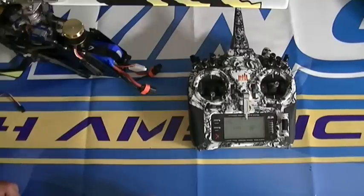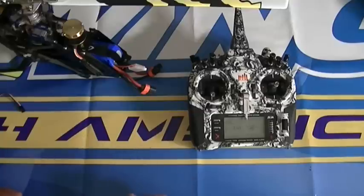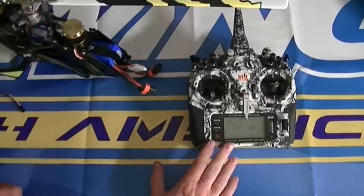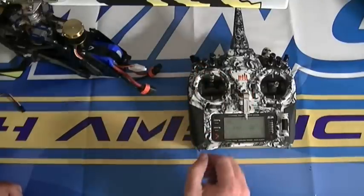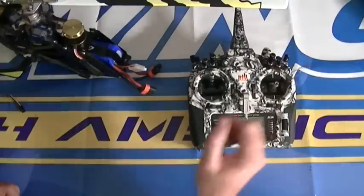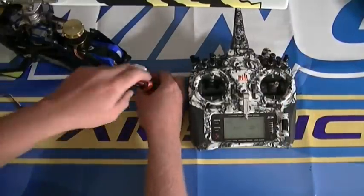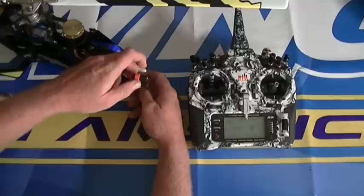The first couple things we're going to do on the transmitter is have it on and on the correct model. We're going to go all the way up to 100 on the throttle stick with throttle hold disengaged.